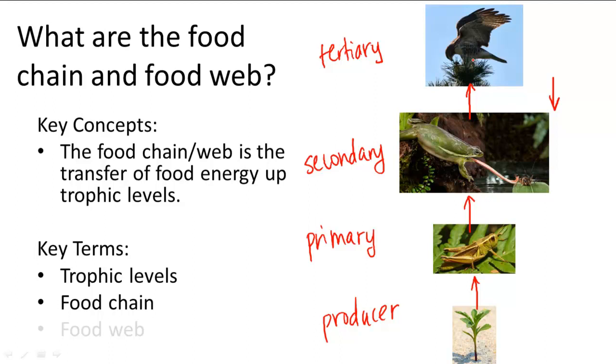In nature, you won't find one producer and one consumer for each trophic level. Instead, you have many organisms on each level.